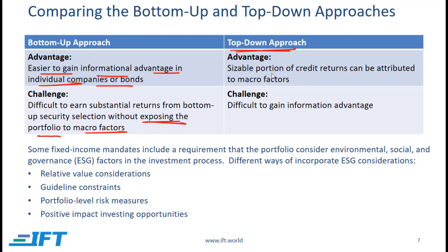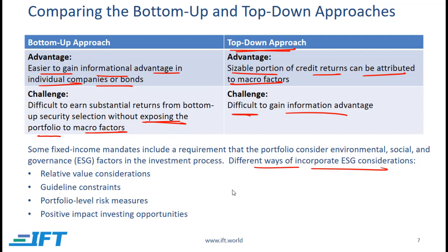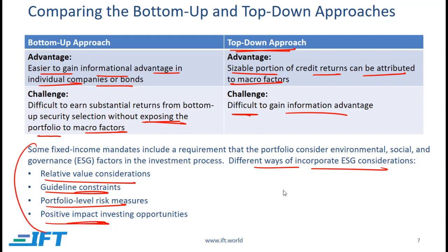With the top-down approach, the advantage is that a sizable portion of credit returns can be attributed to macro factors, but since many analysts evaluate these macro factors it's difficult to gain an informational advantage. Some fixed income mandates include a requirement to consider environmental, social and governance (ESG) factors. ESG can be incorporated via relative value considerations (a heavily polluting company is likely to underperform), guideline constraints (e.g., excluding tobacco companies), portfolio-level risk measures, or by consciously including companies with a positive societal impact.